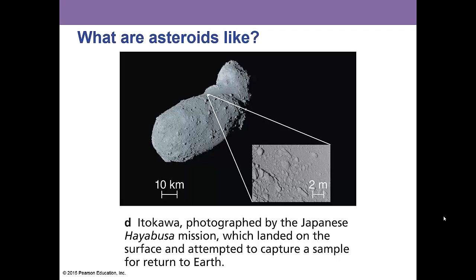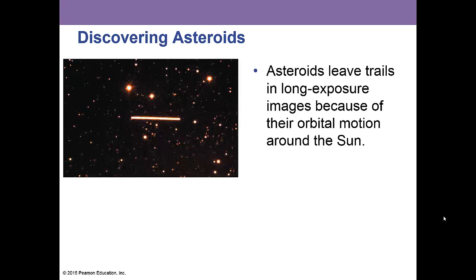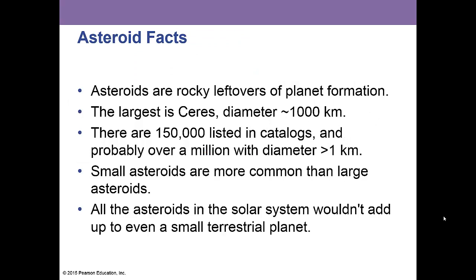What are asteroids like? Here is one — this is Ikitawa. This was a mission by the Japanese to land on an asteroid and do a return sample back to Earth. You can see it's very dusty and grainy. Asteroids leave trails in long exposure images because of their orbital motion around the sun, and this is how we can help discover them.